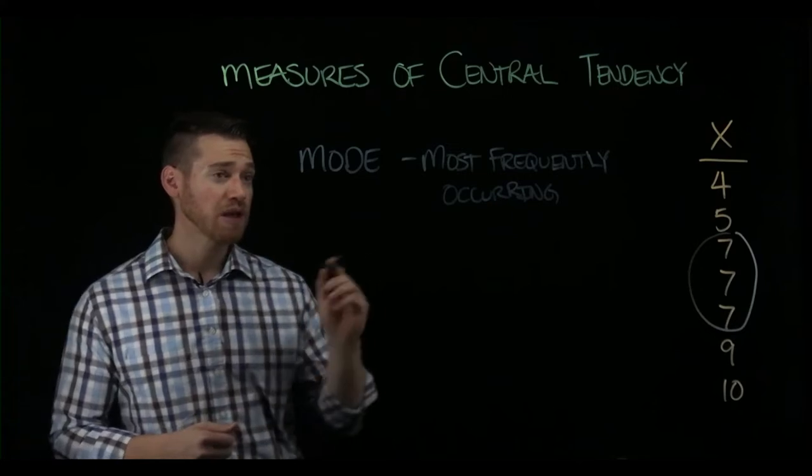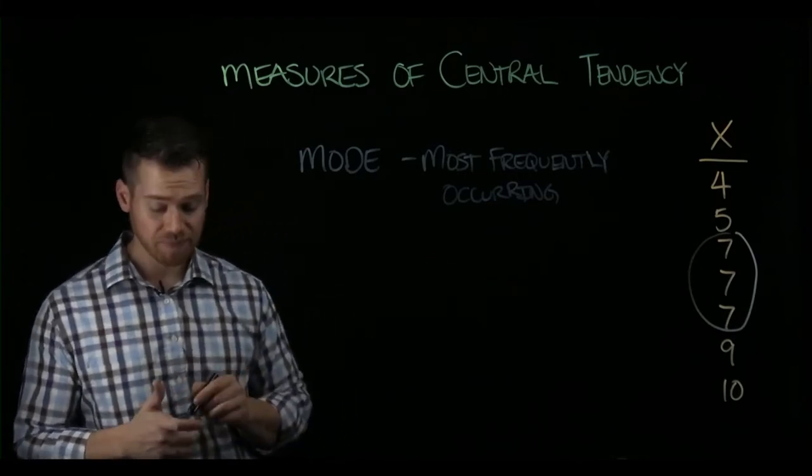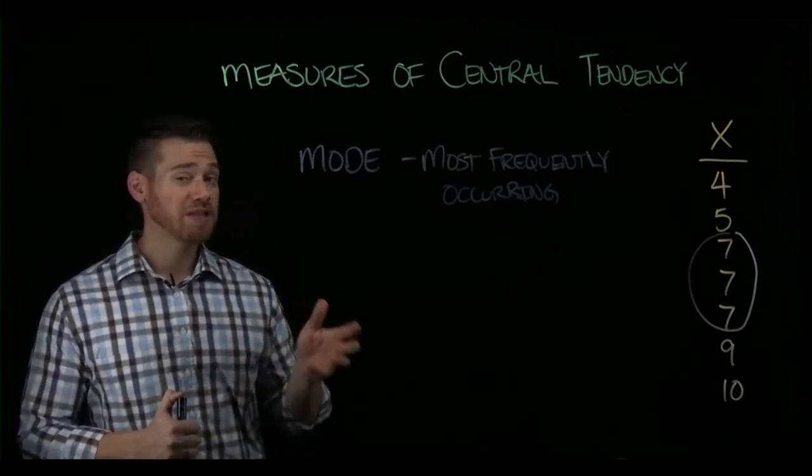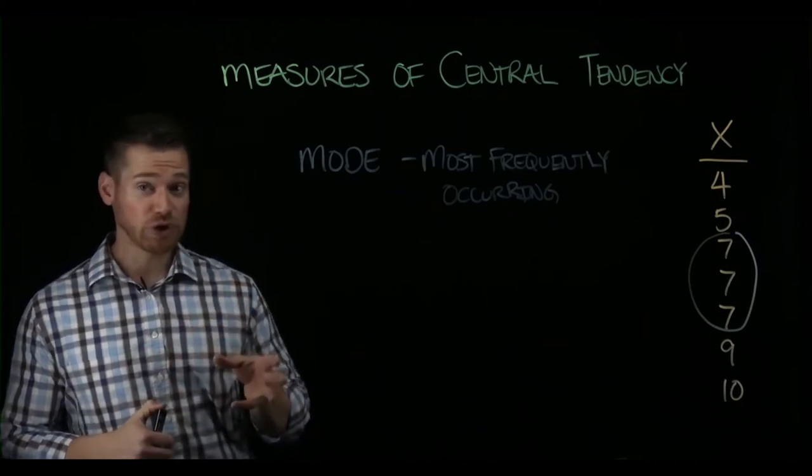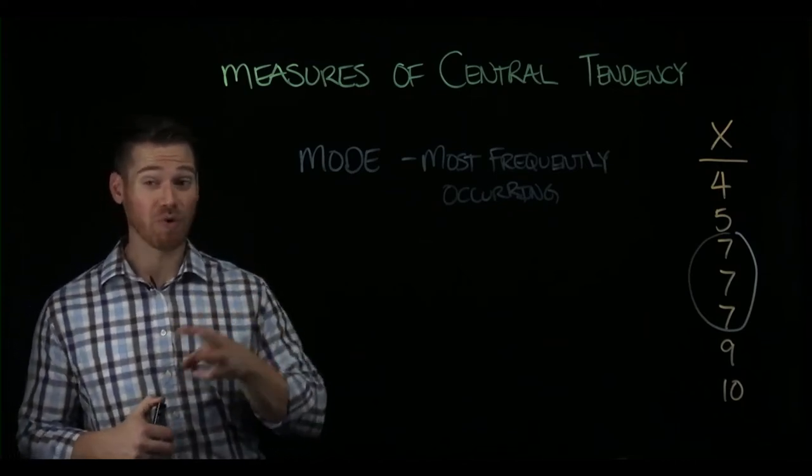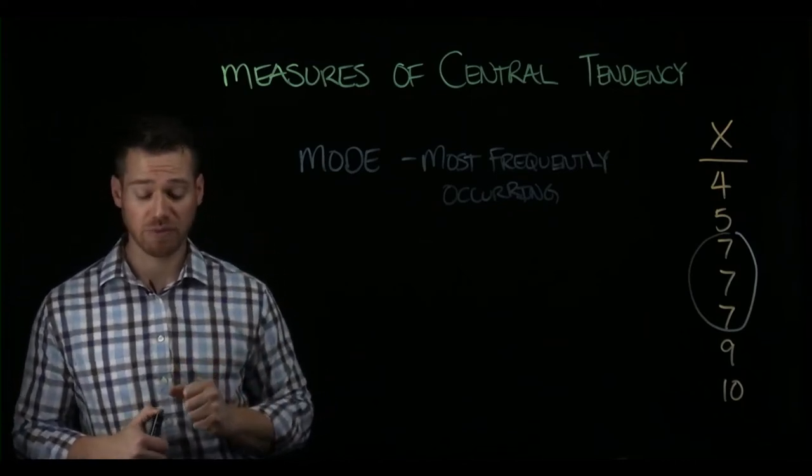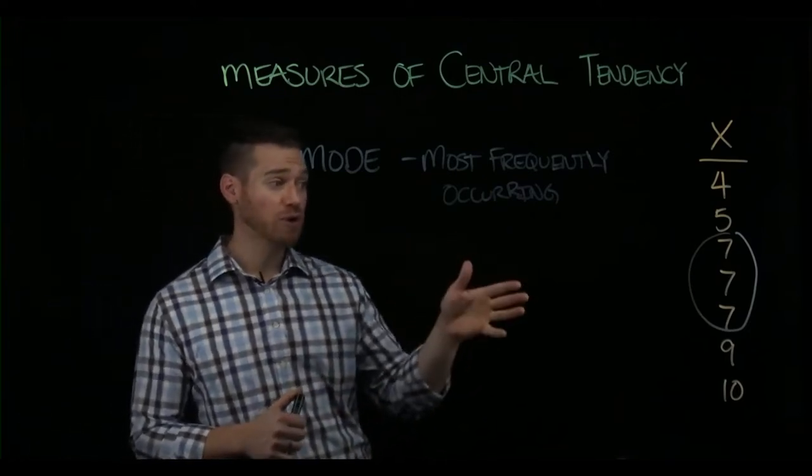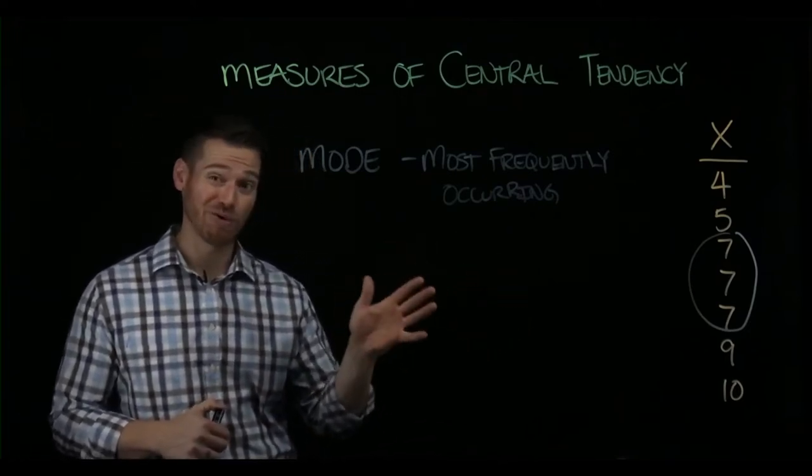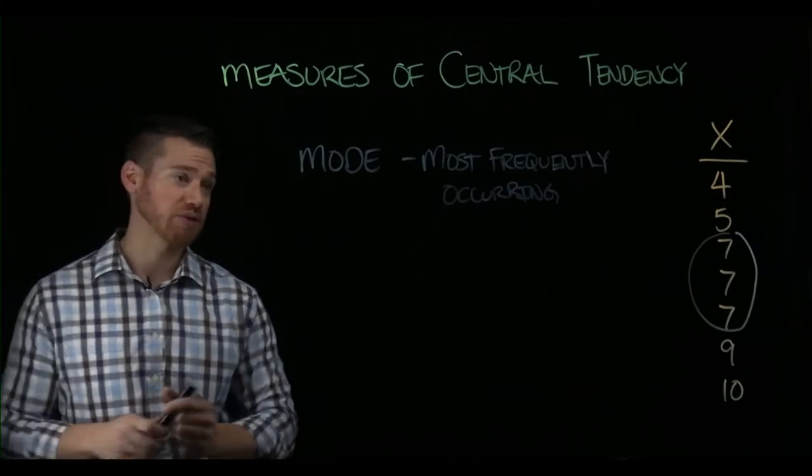So it's important to realize the mode doesn't necessarily mean the majority. It simply means it occurs more often than any other value in the distribution. So the majority of scores are not a seven, but seven is the modal score.